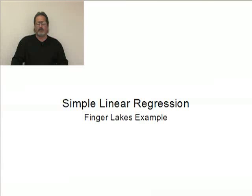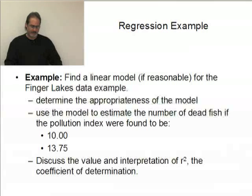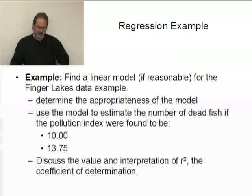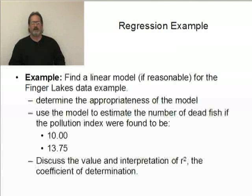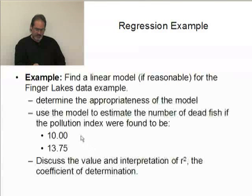We quite often want to use the relationship between the two variables for predictive purposes. So let's take a look once again at the Finger Lakes data. We want to determine how appropriate a linear model would be and use this model to estimate the number of dead fish giving a pollution index of 10.0.